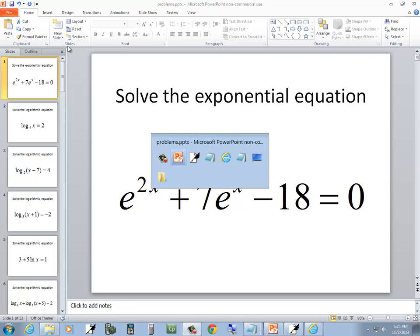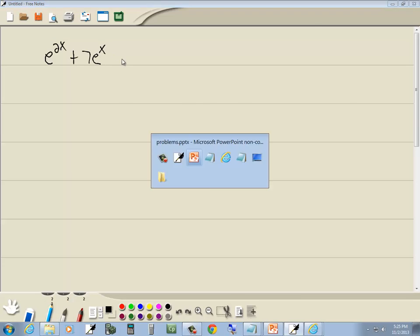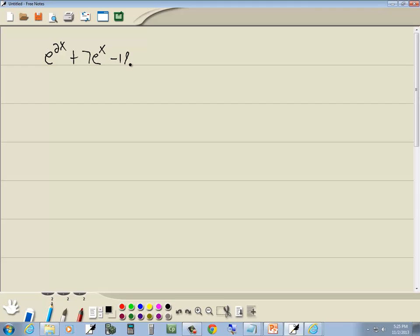Let's solve this exponential equation with my pen. There we go. We got e to the 2x plus 7e to the x minus 18 equals 0.